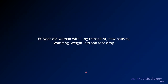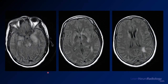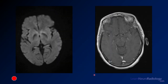Our next case is a 60-year-old woman status post lung transplant who now has nausea, vomiting, weight loss, and foot drop. You see patchy white matter abnormalities on FLAIR — the hippocampi are not normal, the dorsal midbrain is not normal, with patchy periventricular white matter abnormalities. The fluid suppression on FLAIR doesn't seem complete. Diffusion and post-contrast imaging are pretty normal, with not a lot going on.